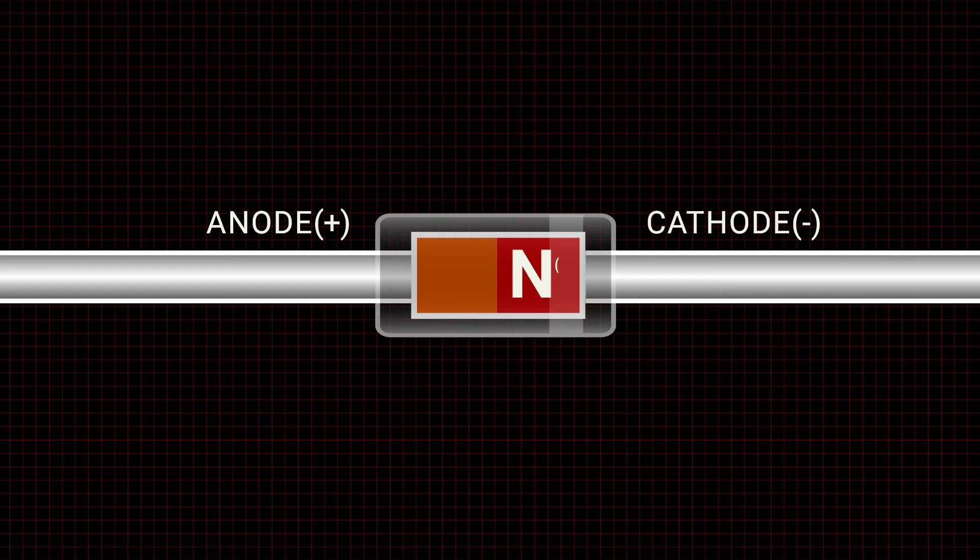Doping creates either an n-type, negatively charged, or a p-type, positively charged region, depending on the material that is added.